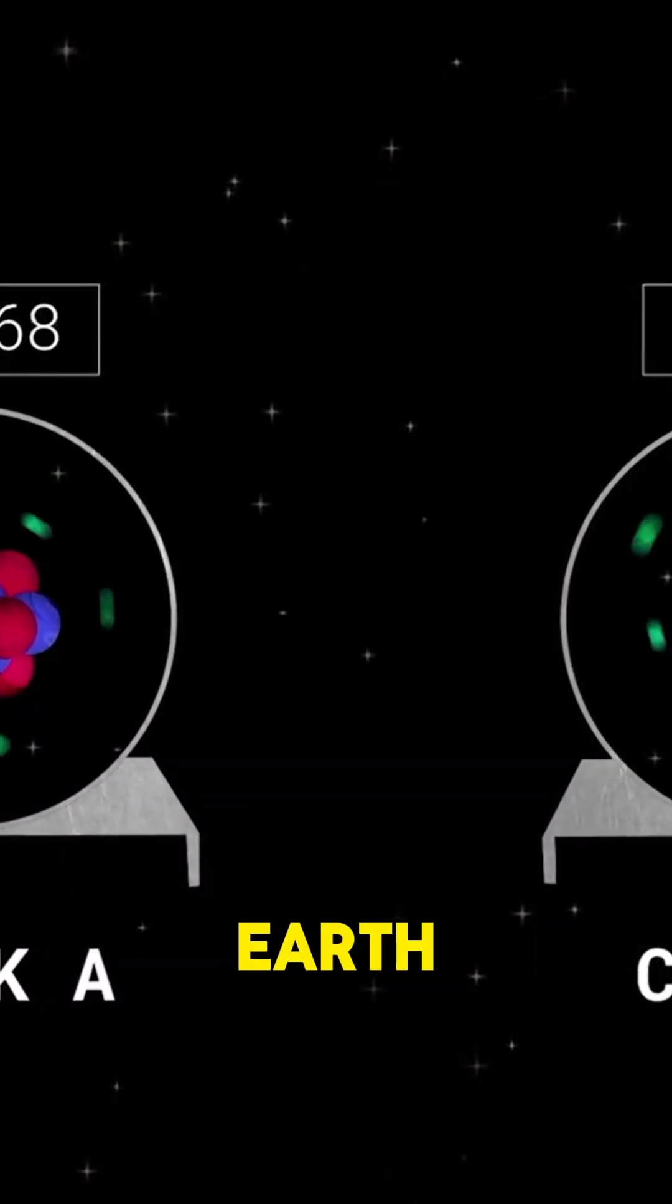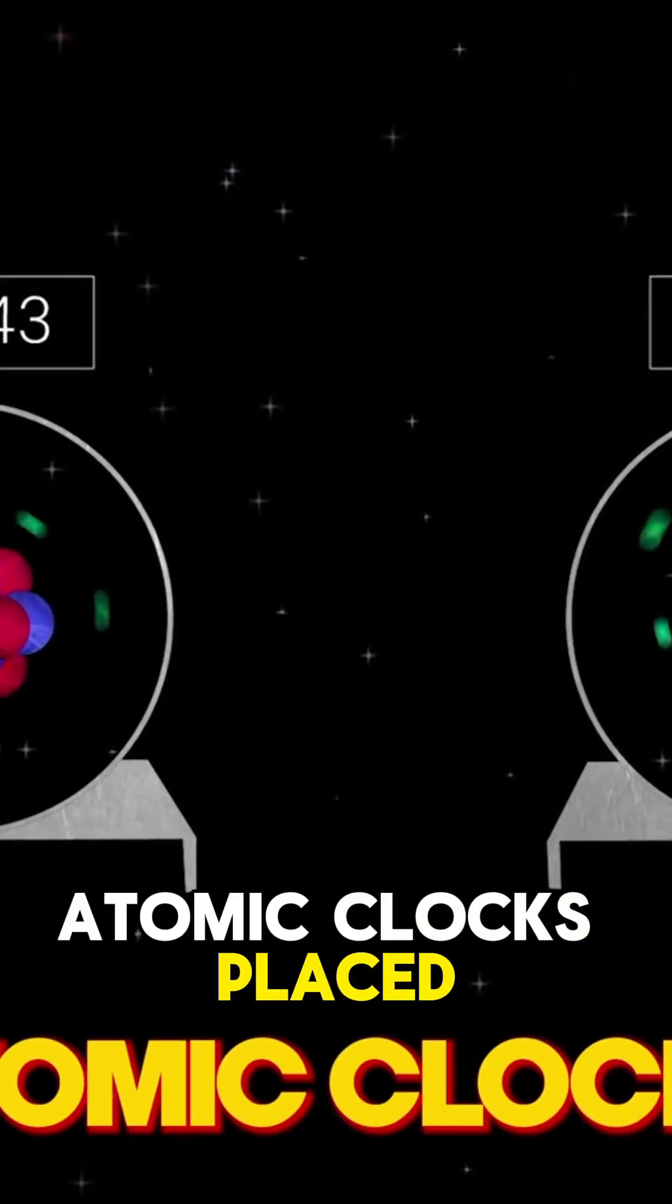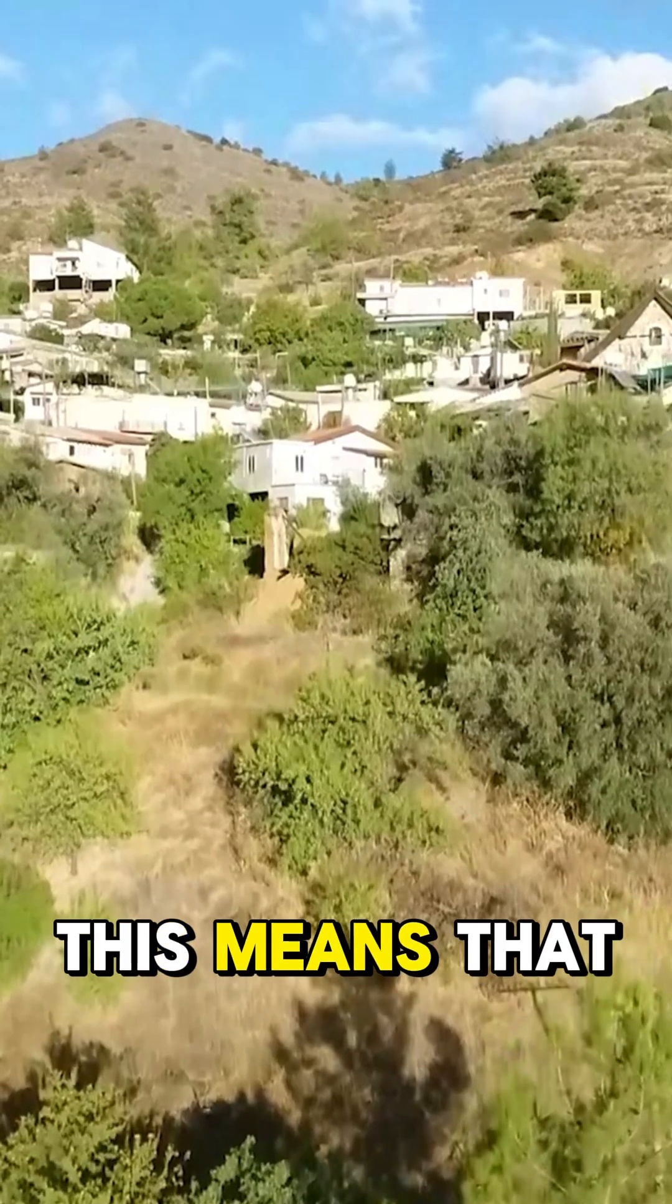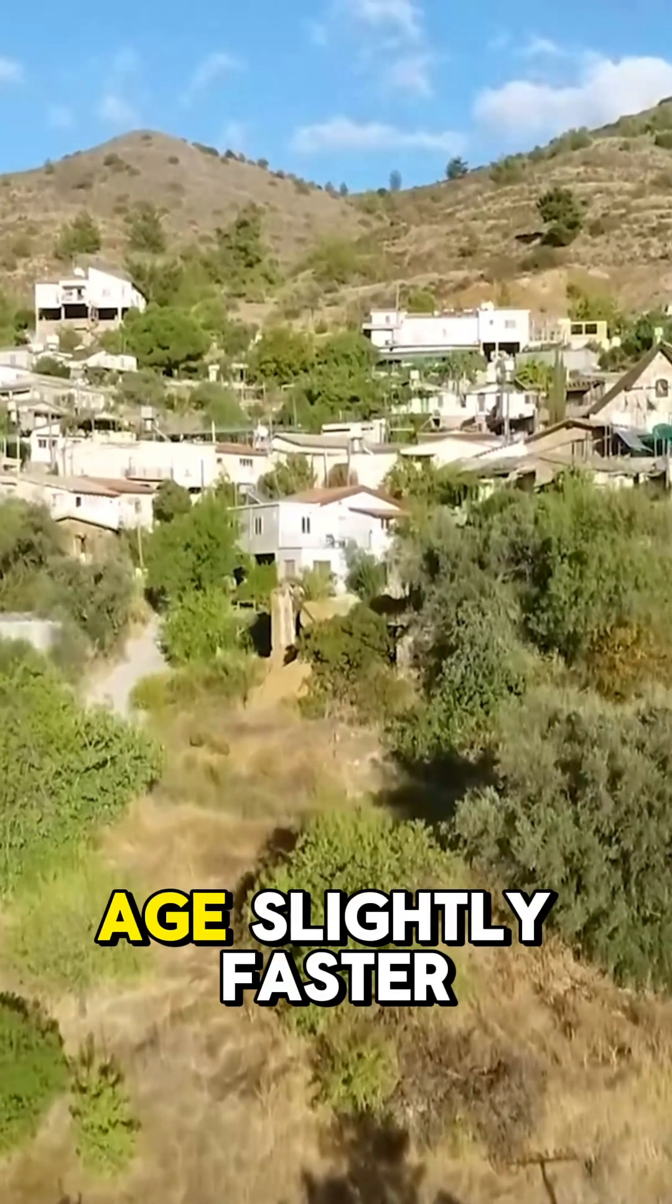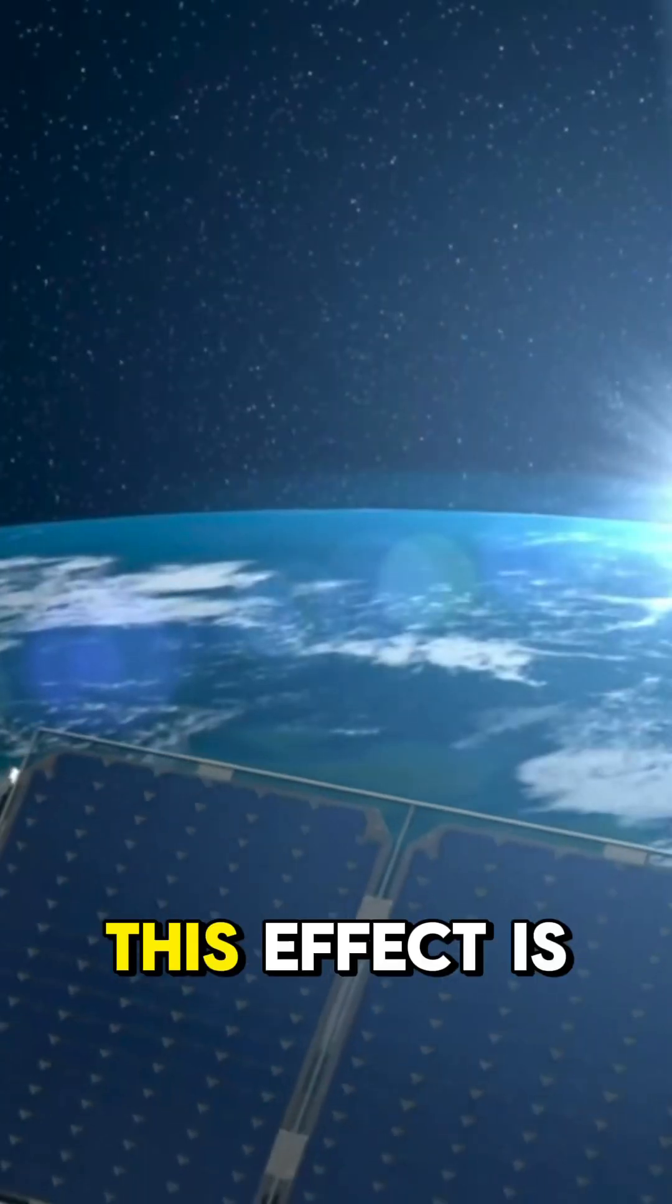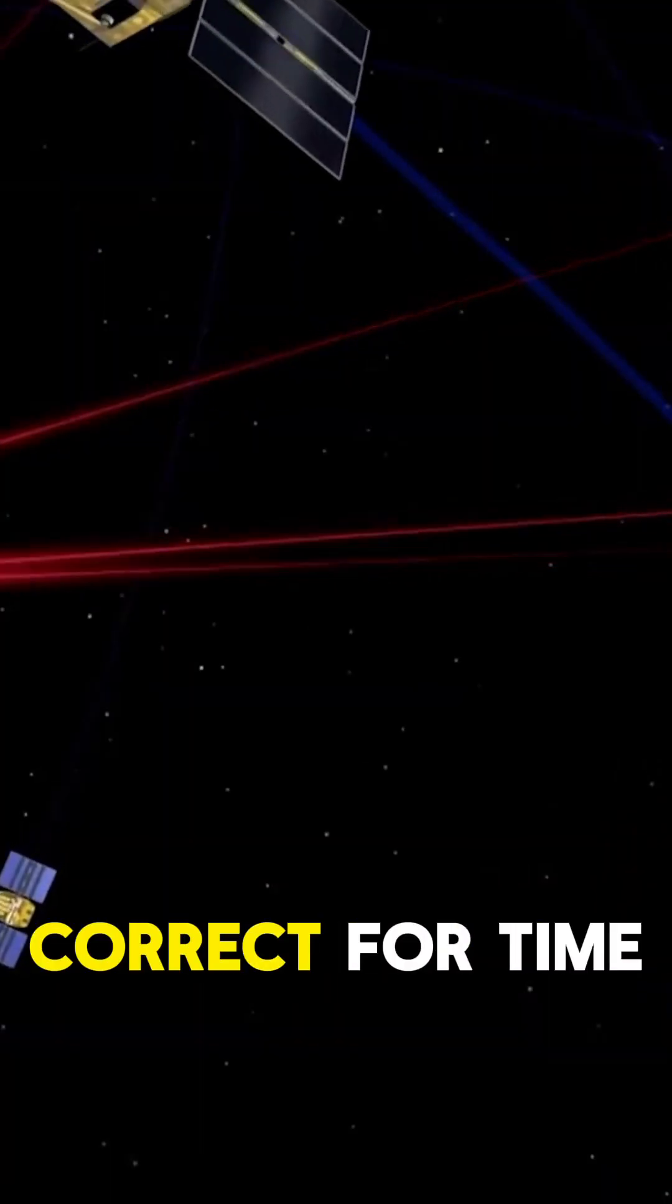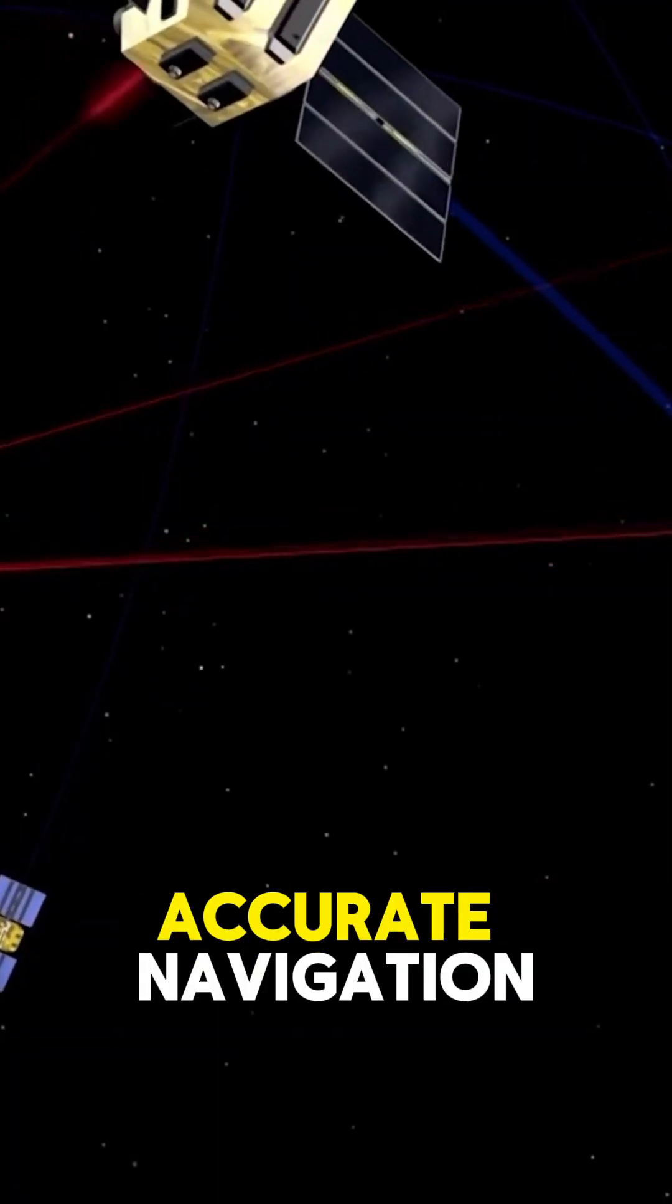Scientists have measured this effect on Earth. Atomic clocks placed at different elevations tick at slightly different speeds. This means that people living on mountains age slightly faster than those at sea level. This effect is also crucial for GPS satellites, which need to correct for time dilation to provide accurate navigation.